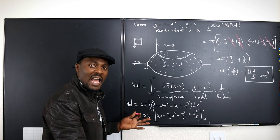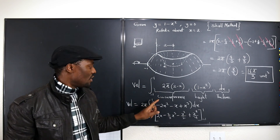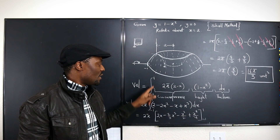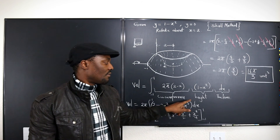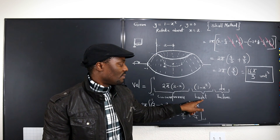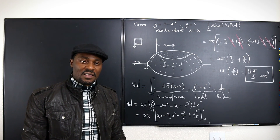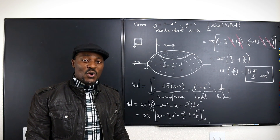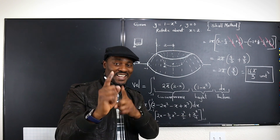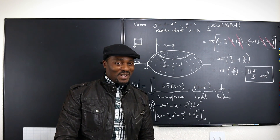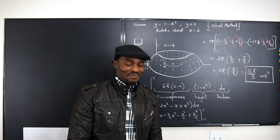I hope you like this. This is the only formula you need to know: the volume is equal to the integral of the circumference multiplied by the height multiplied by the thickness, and you'll always be fine. I'll see you in the next video. Until then, don't stop learning — because those who stopped learning have stopped living.